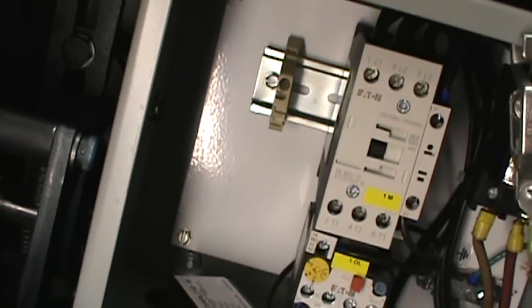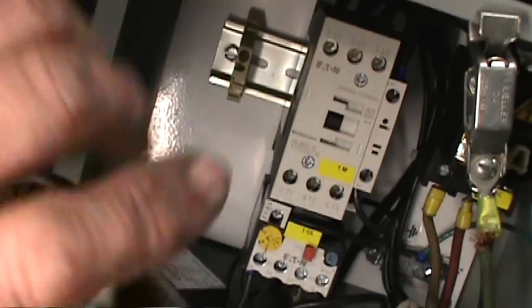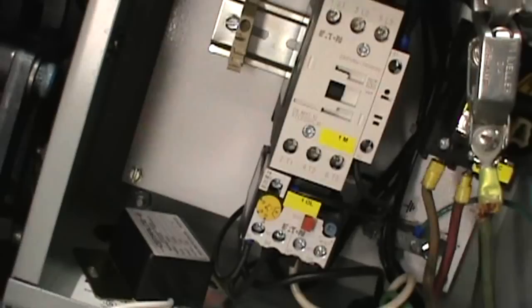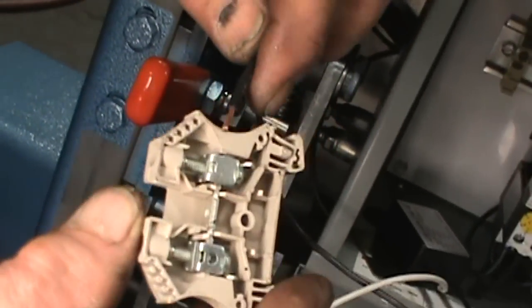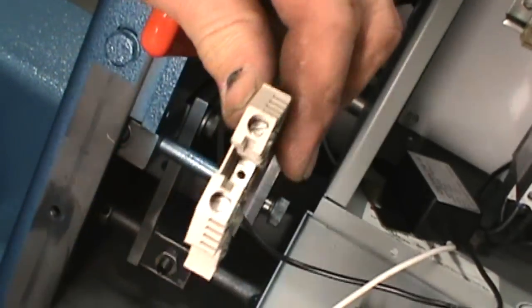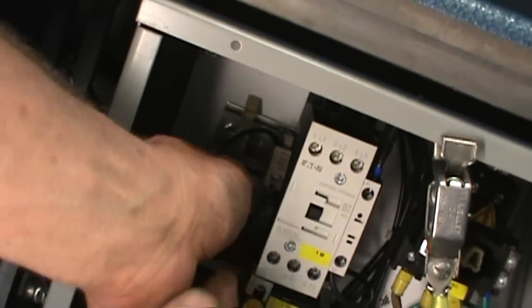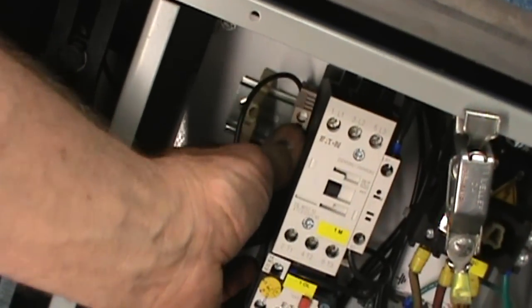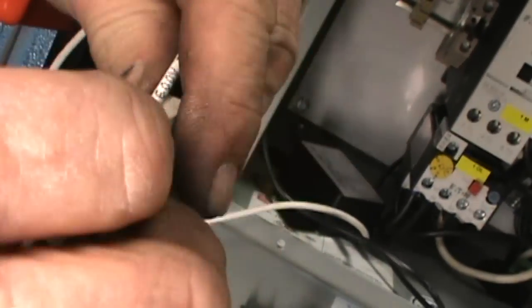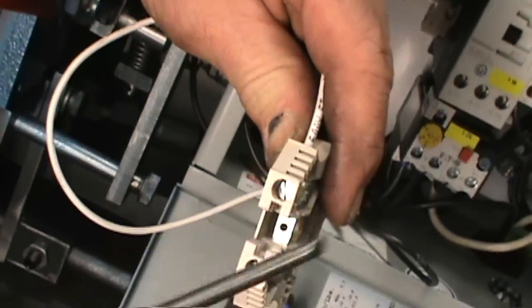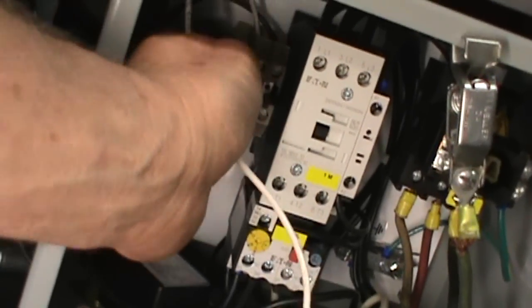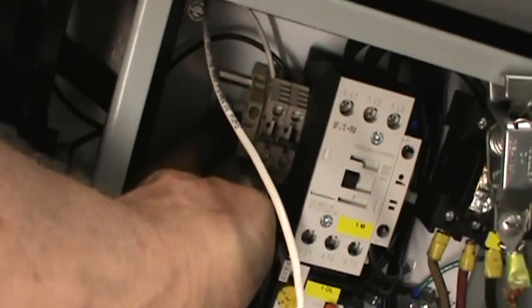Loosen the barrier block and slide it over. Take one of the terminal blocks and one of the leads from the laser. Insert it and screw it down. Insert from the top and snap it in from the bottom. Do the same with the second terminal block. After both terminals are done, slide the barrier block back and tighten.